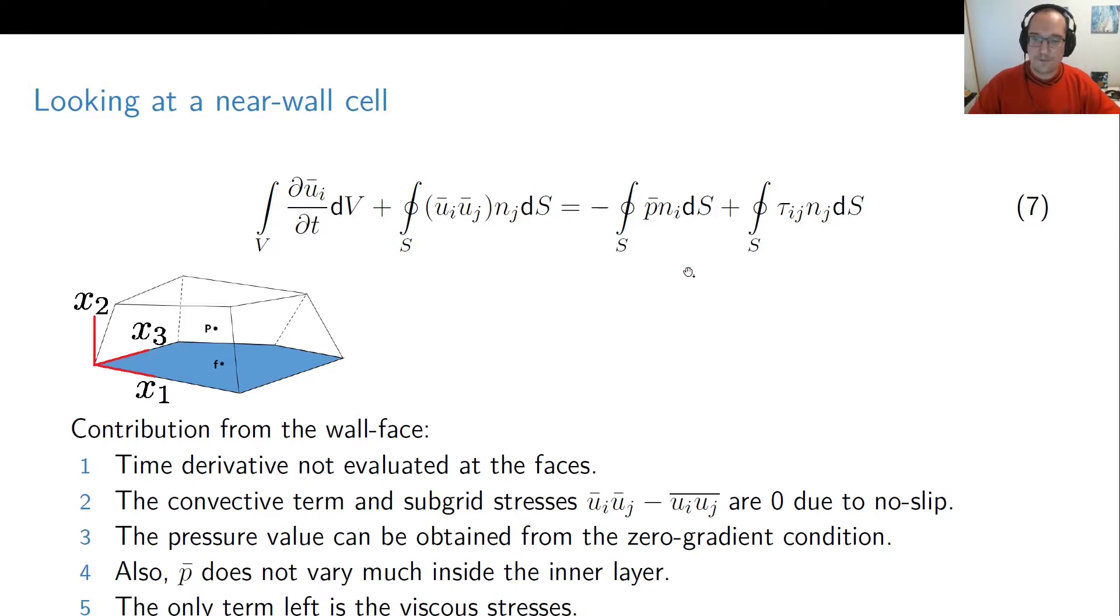Okay the next term is the pressure and pressure is not going to be zero, it's going to have some value but we have no difficulty in obtaining that value because at the wall pressure assumes a zero gradient condition. So in order to get the value at F we can simply copy what we have in the cell center at P and this will give us the correct boundary condition.